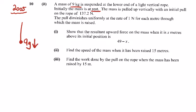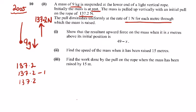The mass is pulled up, so the force going up is 137.2 newtons. The pull diminishes uniformly at a rate of 1 N for each meter through which the mass is raised. So it starts with 137.2, then 137.2 minus 1, 137.2 minus 2, all the way to 137.2 minus x, which is what we're dealing with here.